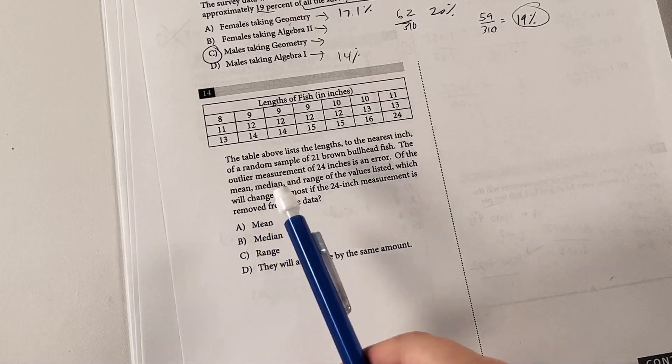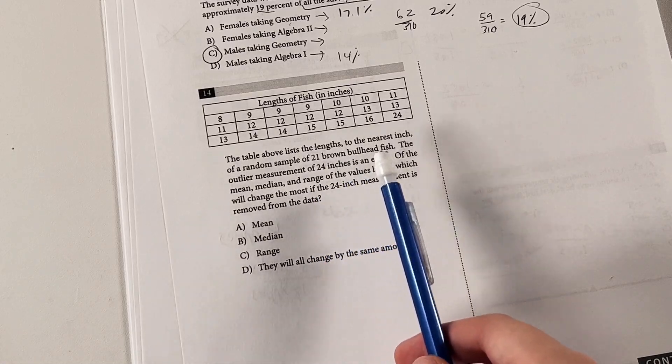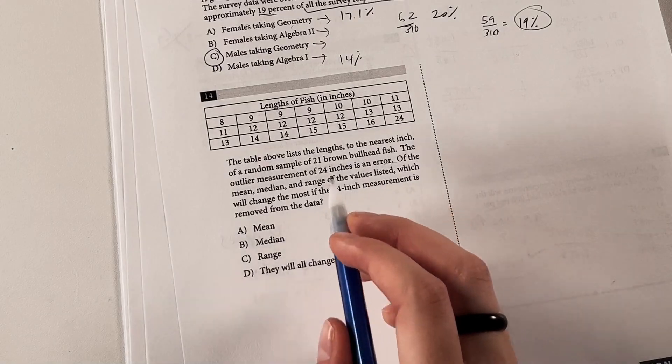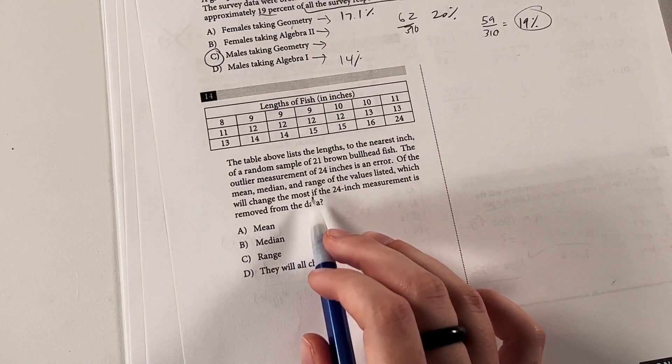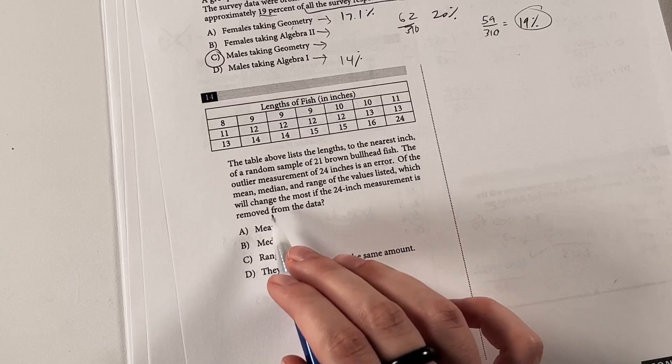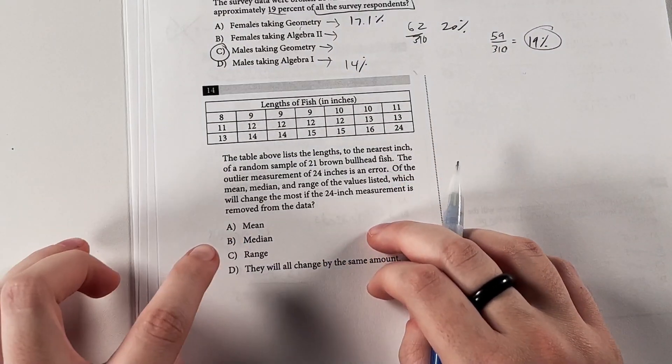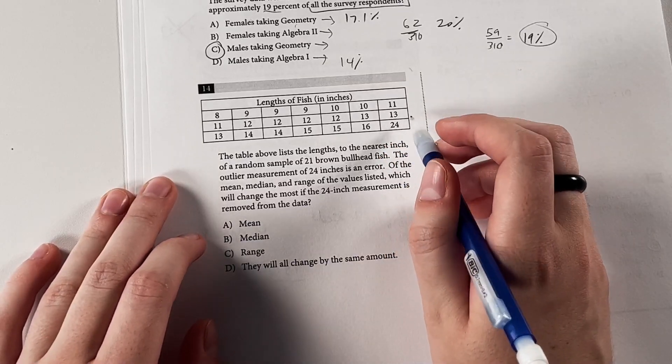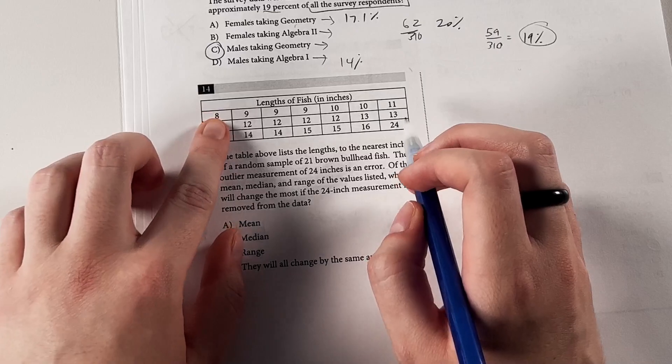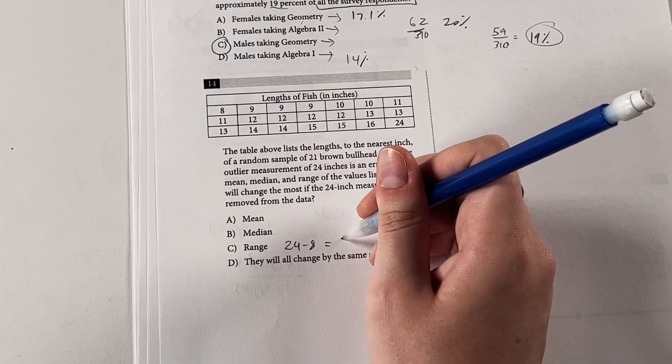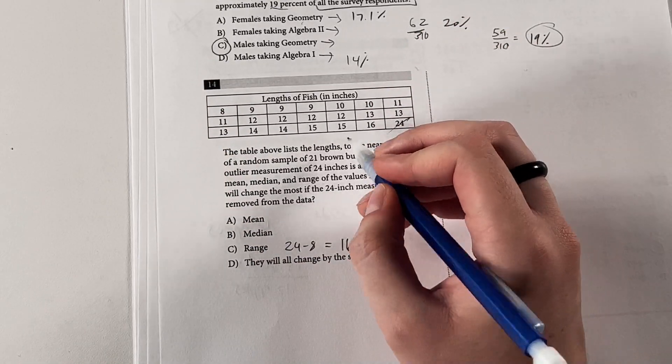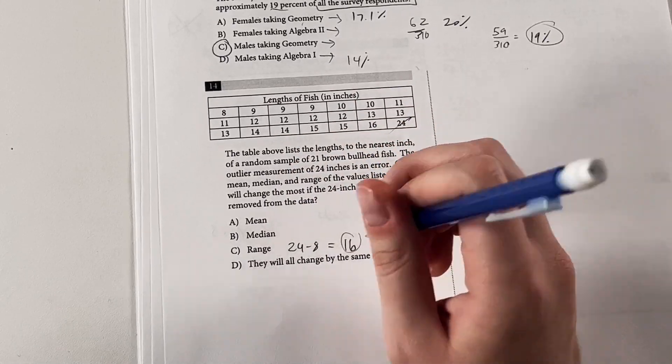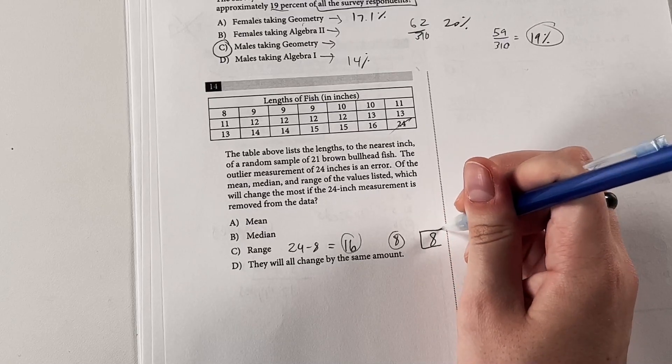Now for this next one, the table above lists the lengths to the nearest inch of a random sample of 21 brown bullhead fish. The outlier measurement of 24 inches is an error. Of the mean, median, and range values listed, which will change the most if the 24-inch measurement is removed from the data? My bet is probably on range, but we don't really know unless we try it. Because the range is going to be the total span of all the measurements. So it would be 24 minus 8 in this case, which is 16. And if we remove that 24, then it would turn into 16 minus 8, which is only 8. So that's a difference in range of 8 for this. So that's our final difference for range.